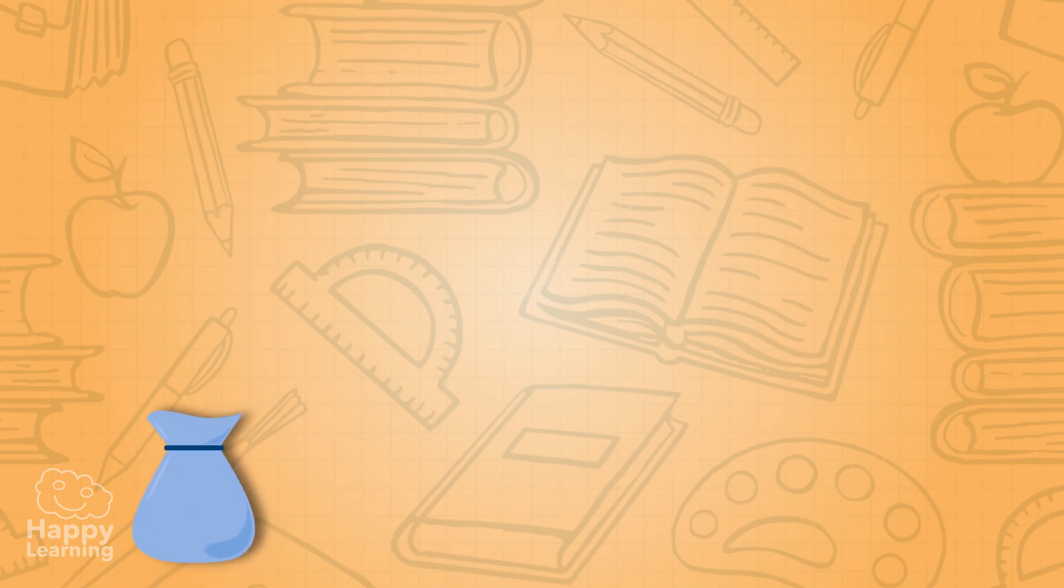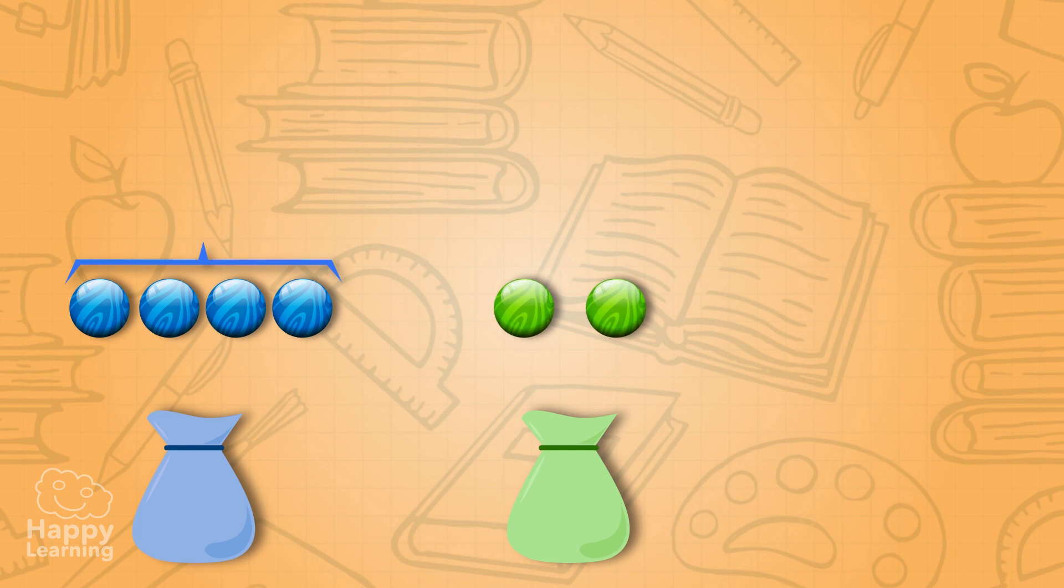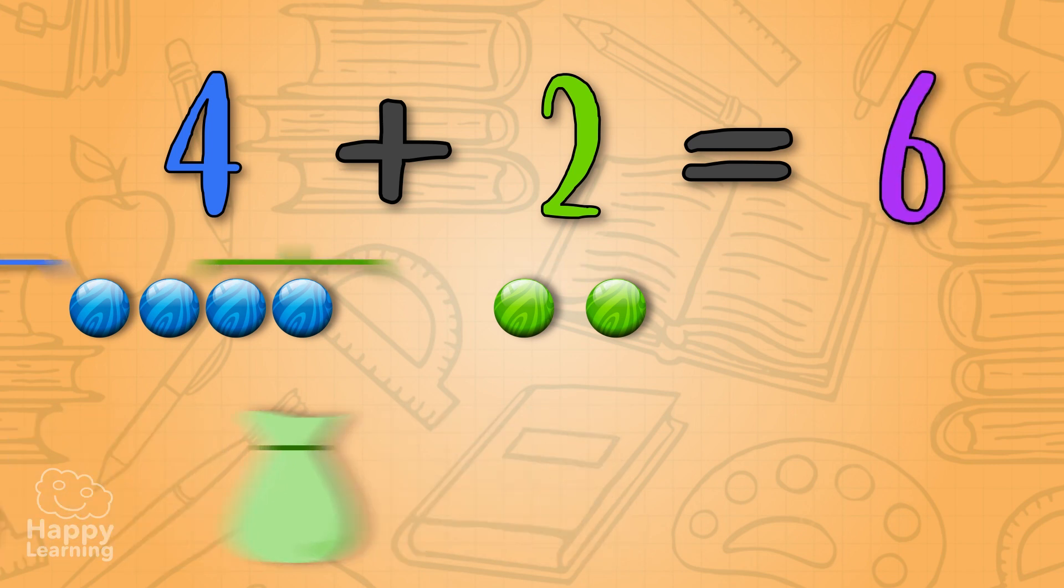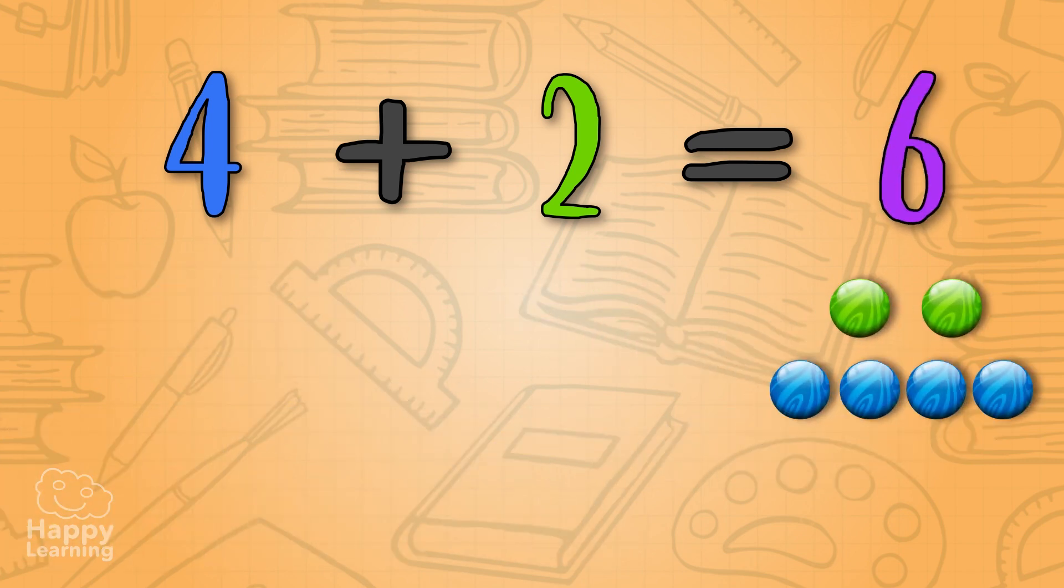If we add four blue marbles, plus two green marbles, we write four plus two. That makes a total of six! So we know we have six marbles!